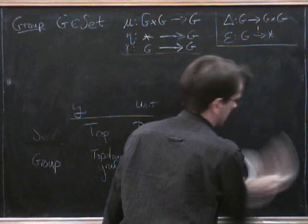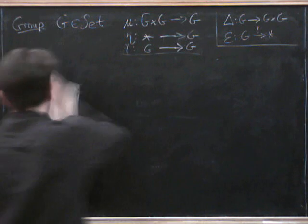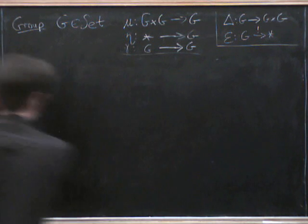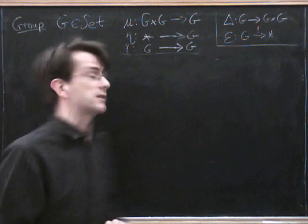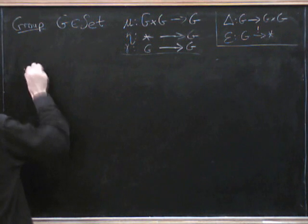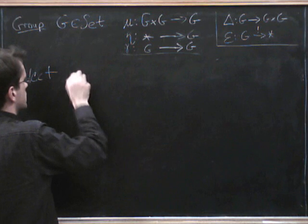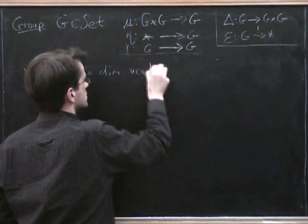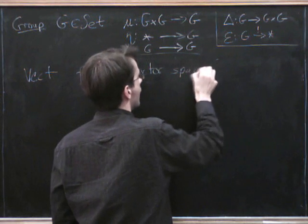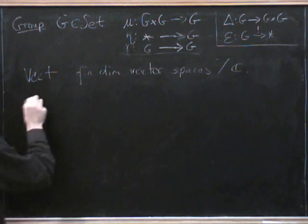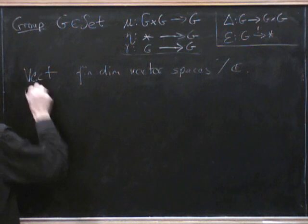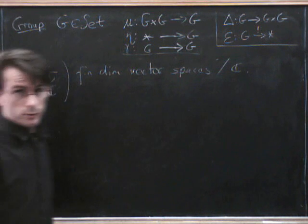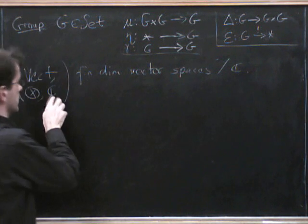So the simplest example of a monoidal category which isn't Cartesian is one which is very familiar to many of you, I suspect. It's just a category of vector spaces. So just for simplicity, I'm going to take Vect to be the category of vector spaces, finite dimensional vector spaces, over the complex numbers. So we have a tensor product, and we have the unit object which will turn out just to be the complex numbers.